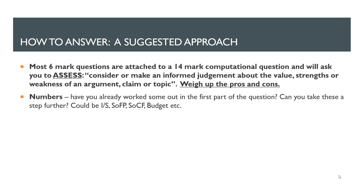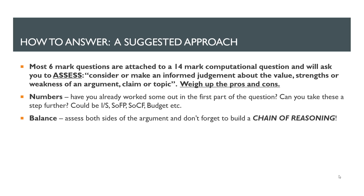So what we can look at are numbers. As I mentioned, this is going to come attached to a 14-mark computational question. You might have just done a cash flow or an income statement, so you can use some of those figures that have already been gleaned. What does that tell you about the size of the business, their cash situation, and whether they can afford whatever they're thinking of doing? Can you take those numbers a step further? If it's asking you about ratios and you've just worked out profit, can you calculate some of those ratios? We also need balance — assess both sides of the argument and always remember to build a chain of reasoning, using connectives and building upon information given in the question to show what the consequences might be.